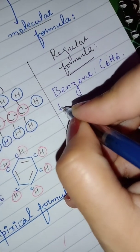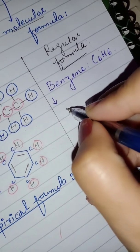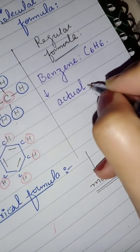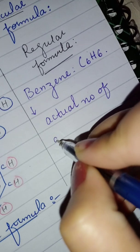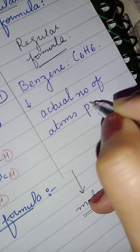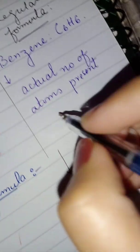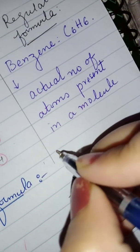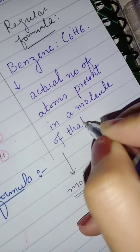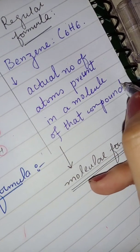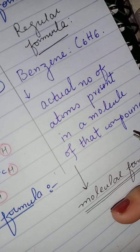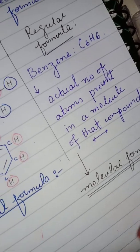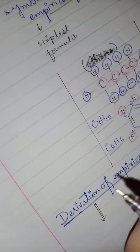C6H6 is the molecular formula of benzene. The molecular formula is the formula which tells you about the actual number of atoms present in a molecule of that compound.